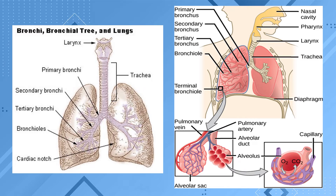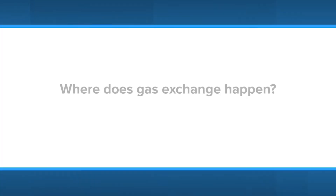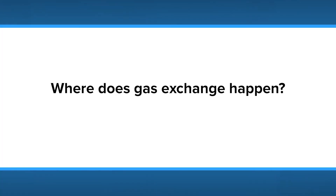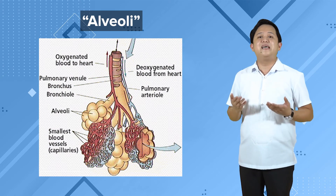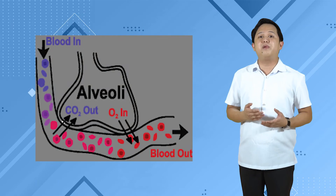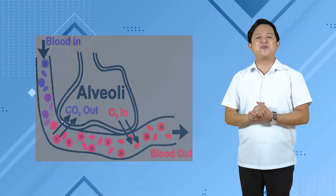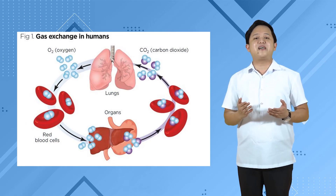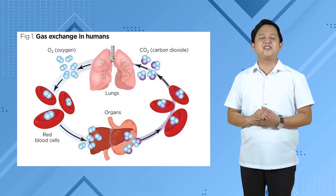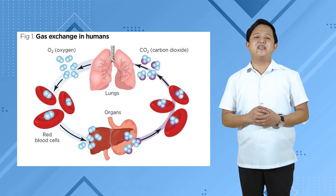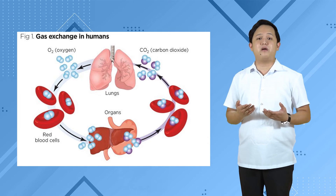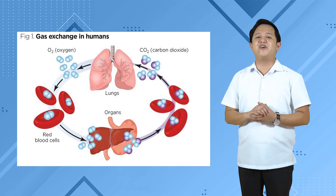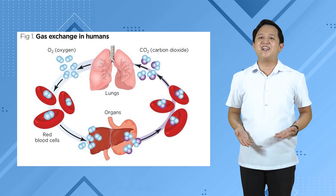Each alveolus has a thin wall only one cell thick, surrounded by very thin capillaries. Oxygen diffuses across the moist thin walls into capillaries and into red blood cells, then is transported to tissue cells during internal respiration. Meanwhile, carbon dioxide moves in the opposite direction — crossing capillary walls and diffusing into the alveoli to be returned to the atmosphere during external respiration.